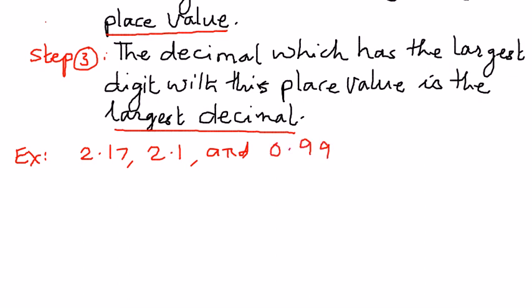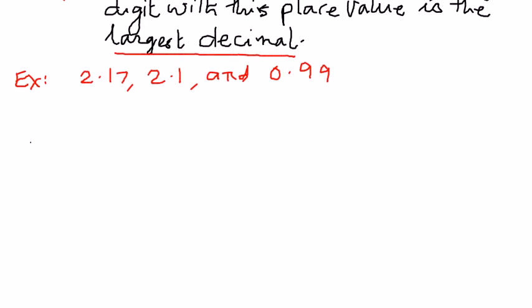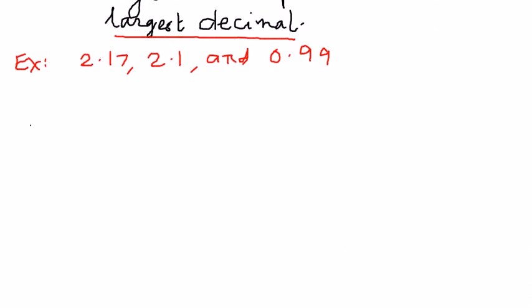2.1 and the third number we have is 0.99. If we want to rank them from the smallest numbers to the largest number, we'll follow the steps which we talked about. Step number one: We want to rewrite the numbers vertically, lining up the decimal place.